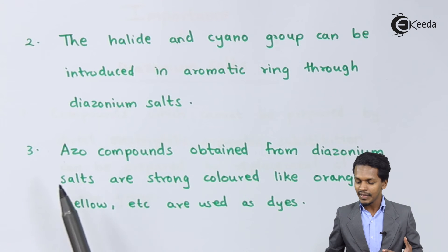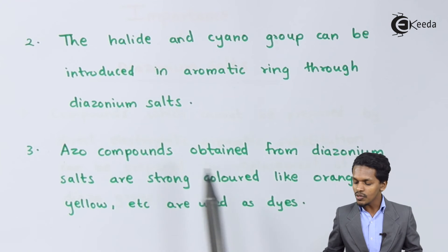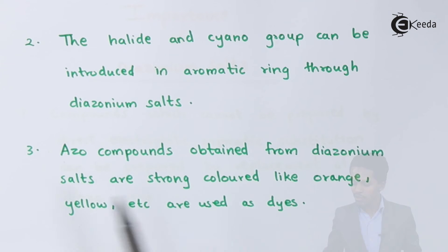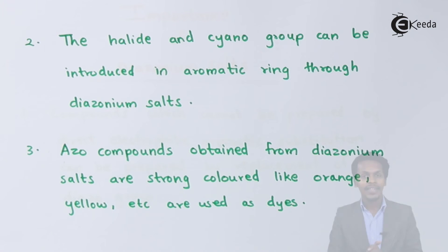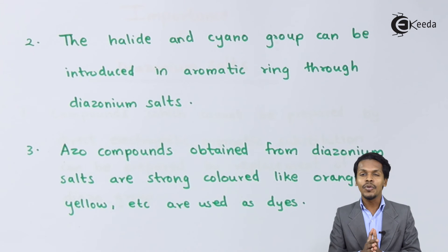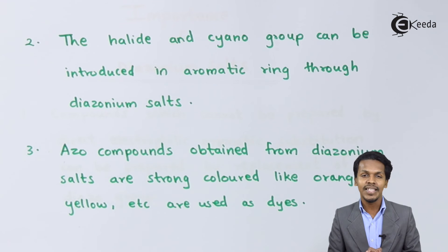The third point is that the azo compounds obtained from diazonium salts are strongly colored — like orange, yellow, etc. — and are basically used in dyes. This is also something we covered in the azo coupling topic. These were the few points regarding the importance of diazonium salts.